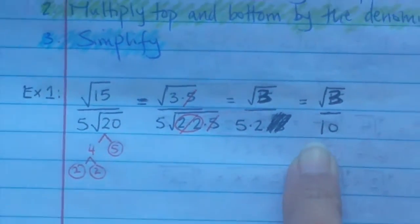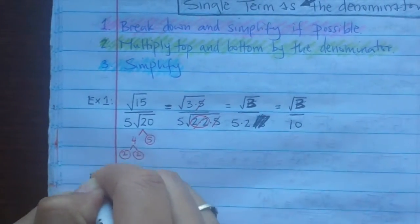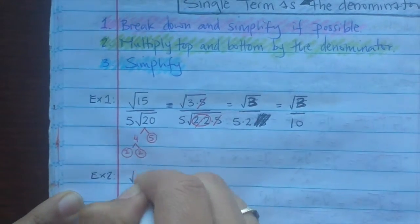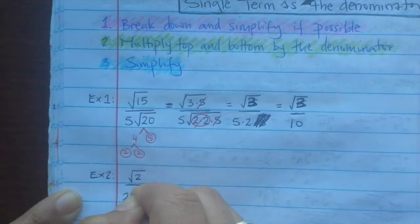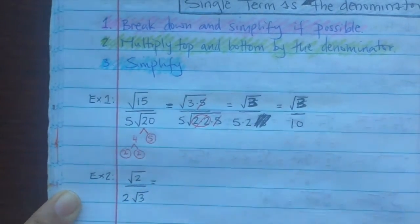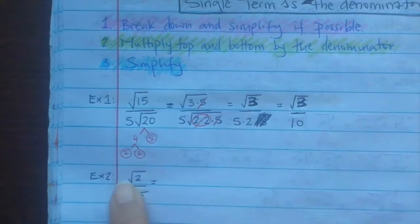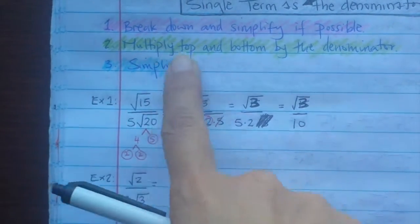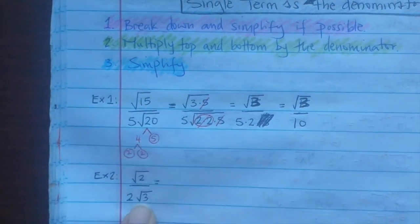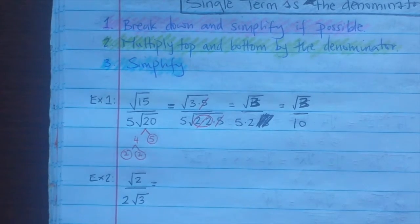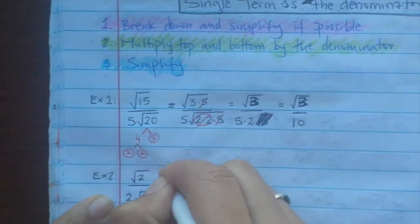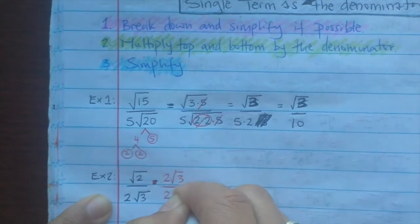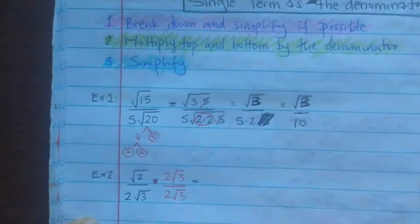Let's take a look at another example. So let's say we had radical 2 over 2 radical 3. We can't break that down — there's nothing to break down. So then multiply top and bottom by the denominator: multiply top by 2 radical 3 and bottom by 2 radical 3.